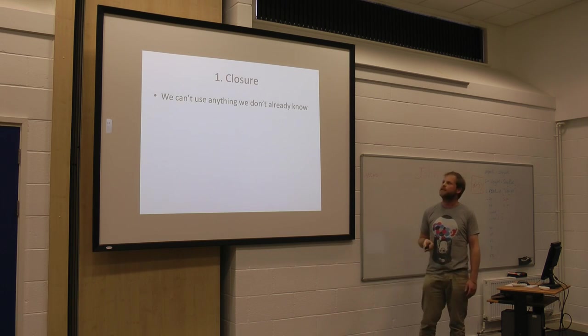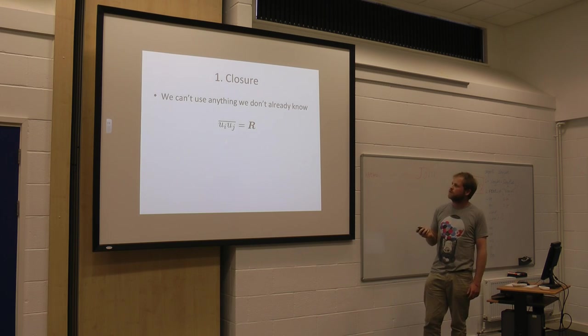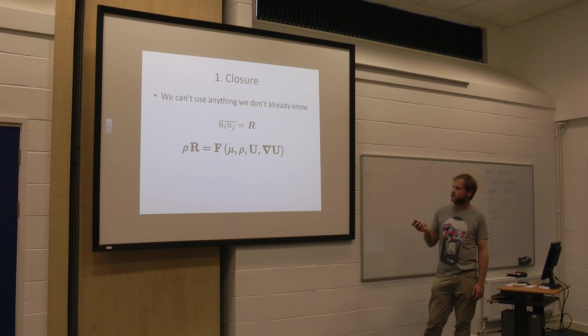So the first thing is closure. What's closure? It means we can't use anything that we don't already know. So this is our Reynolds stress term, R. And we're just going to say that we're going to use the things that we do know about the flow to try and characterize this thing.